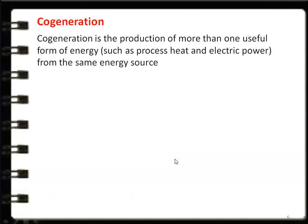Cogeneration is the production of more than one useful form of energy — such as process heat and electric power — from the same energy source. From one heat supply source, we produce process heat as well as electric power. That is cogeneration: generating electric power and heat simultaneously.